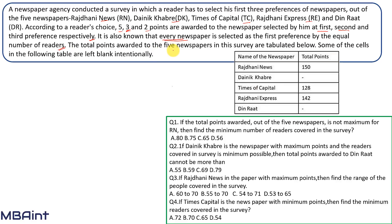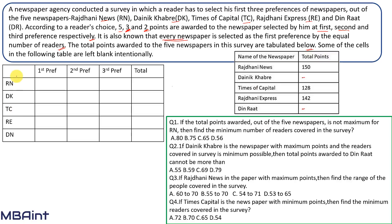The total points awarded to the five newspapers in the survey are tabulated below. Some cells in the following table are left blank intentionally. We can draw a table with the five newspapers along one column and first preference, second preference, third preference, and total points along the rows.